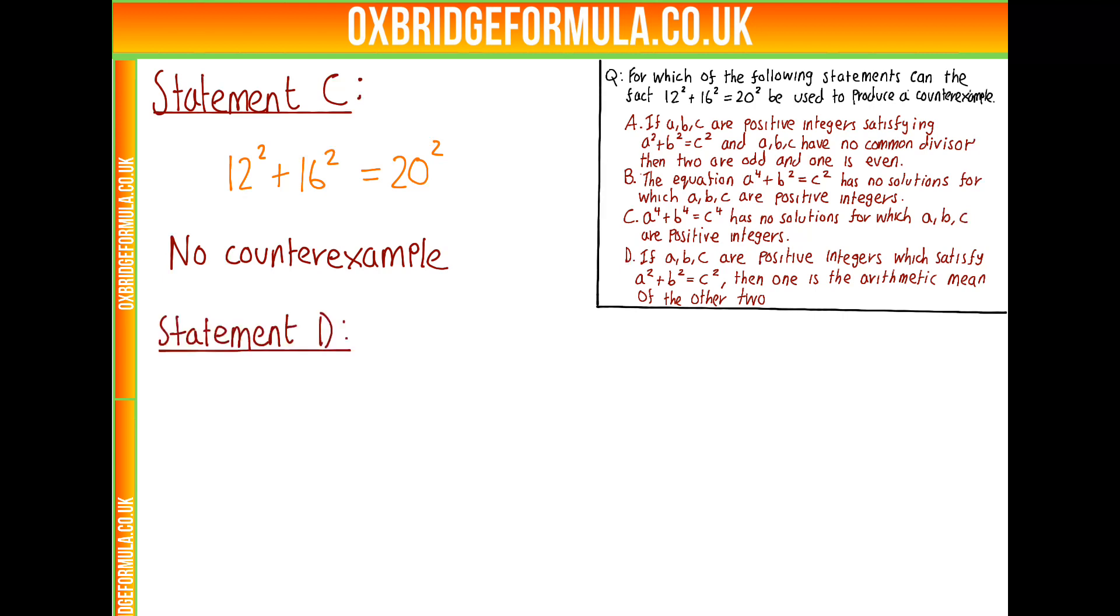Statement D: What would a counterexample look like? We need A, B, C positive integers which satisfy A squared plus B squared is C squared, where none of them are the arithmetic mean of the other two. The example we've got, 12, 16, 20, we know 16 is 20 plus 12 over 2, so 16 is the arithmetic mean of 20 and 12. That means we don't have a counterexample to D.